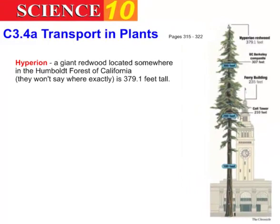For example, here's a giant redwood called Hyperion. They actually gave this tree a name. It's located in the Humboldt Forest of California and the people who discovered it won't say exactly where it's located because they're quite worried that people will get in there and do terrible things to it. So to protect the tree, they're sort of keeping that a secret. But this tree holds the record, it's 379.1 feet tall, which by comparison with the other structures over here, for example, this is the Ferry Building Tower in San Francisco, we can see that this really is an incredibly tall tree.